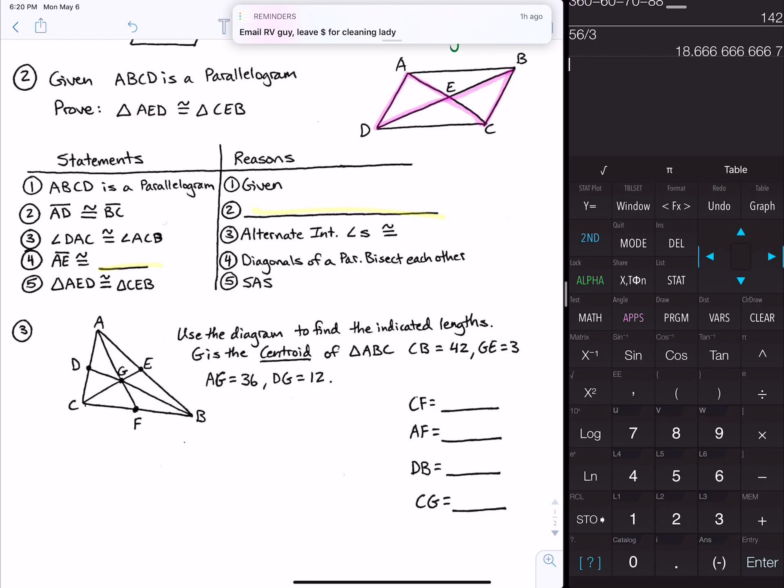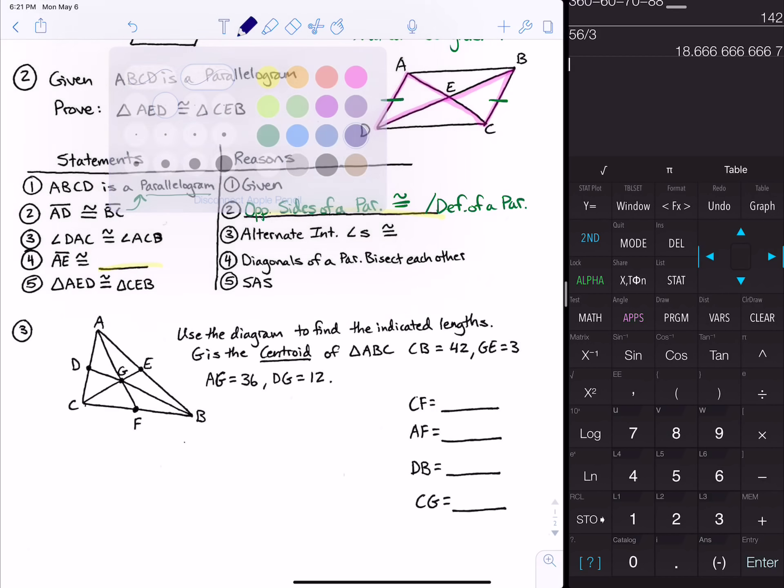The reason normally goes with what was above it in the proof. Because this is a parallelogram, opposite sides would be congruent. You could write that opposite sides of a parallelogram are congruent, or another way to say it is just simply say definition of a parallelogram. The next statement says angle DAC is congruent to angle ACB.